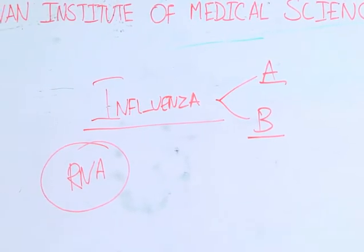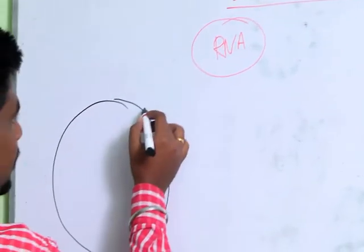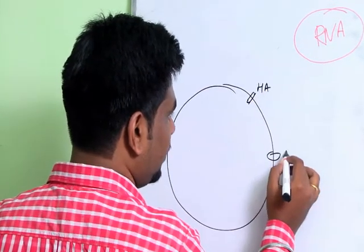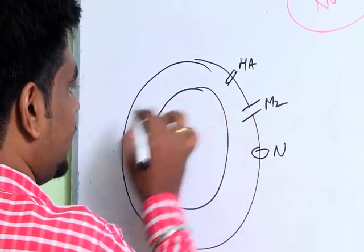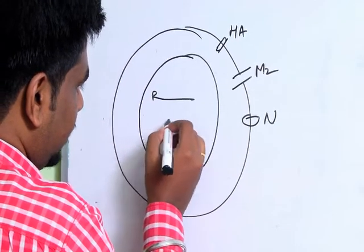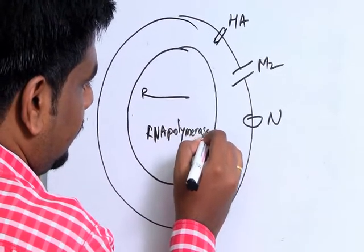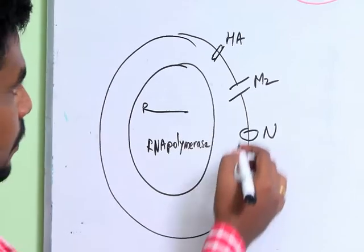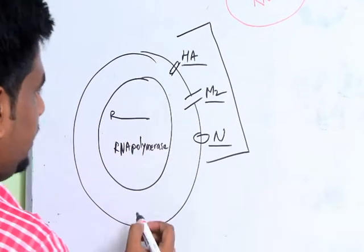We need to know the structure of the influenza virus before going into its replication cycle. The outer layer consists of hemagglutinin, neuraminidase, and an ion channel called the M2 ion channel. Inside there is a capsid which contains an RNA and an RNA polymerase. So the three key structural proteins are hemagglutinin, M2 ion channels, and neuraminidase.